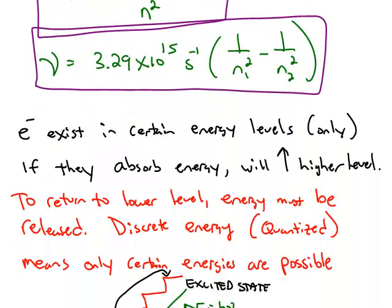So if you only get certain values of energy, it must be because the electrons exist in certain energy levels only. Passing the electricity through adds energy to our system, and so the electrons bump up to a higher energy level. In order to return to the lower level, energy has to be released, and so this could be released in the form of visible light, or ultraviolet radiation, or something like that.